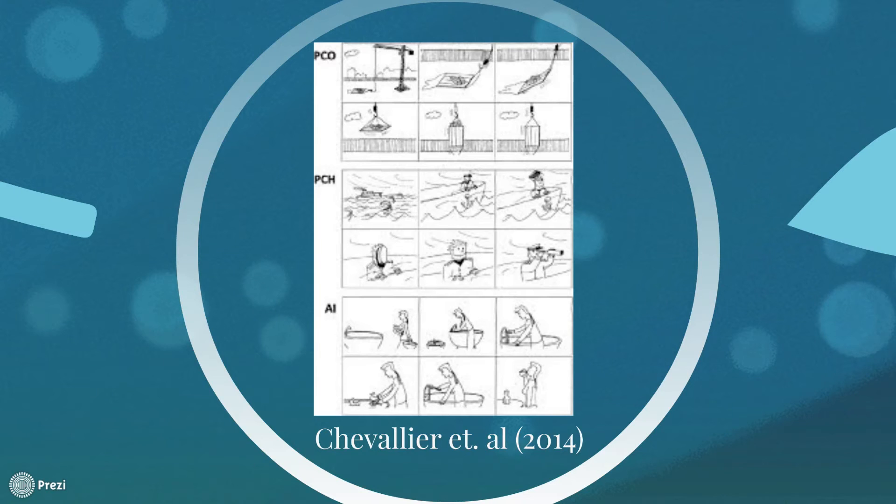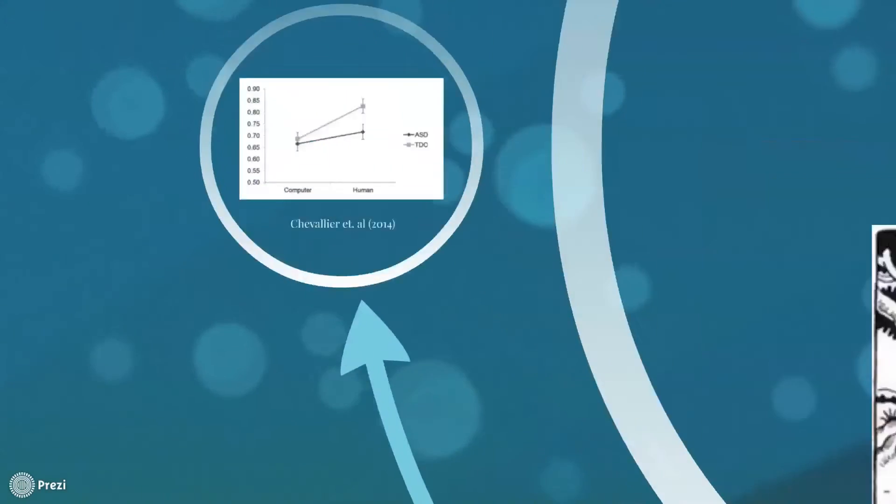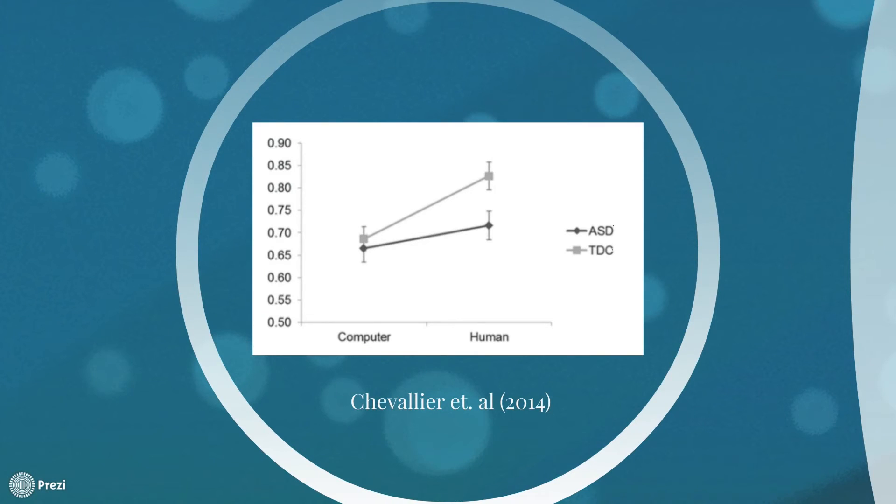Typically developing and autistic children were shown picture strips and asked to choose one of three pictures to correctly complete the story. The researchers found that while the typically developing group performed noticeably better in the social context, when the test was administered on a computer, the two groups performed similarly. The researchers suggest that typically developing children may be more socially motivated to perform and therefore benefit when an experimenter is in the room. So, changing the way in which we test for theory of mind can provide support that autistics do not lack it.